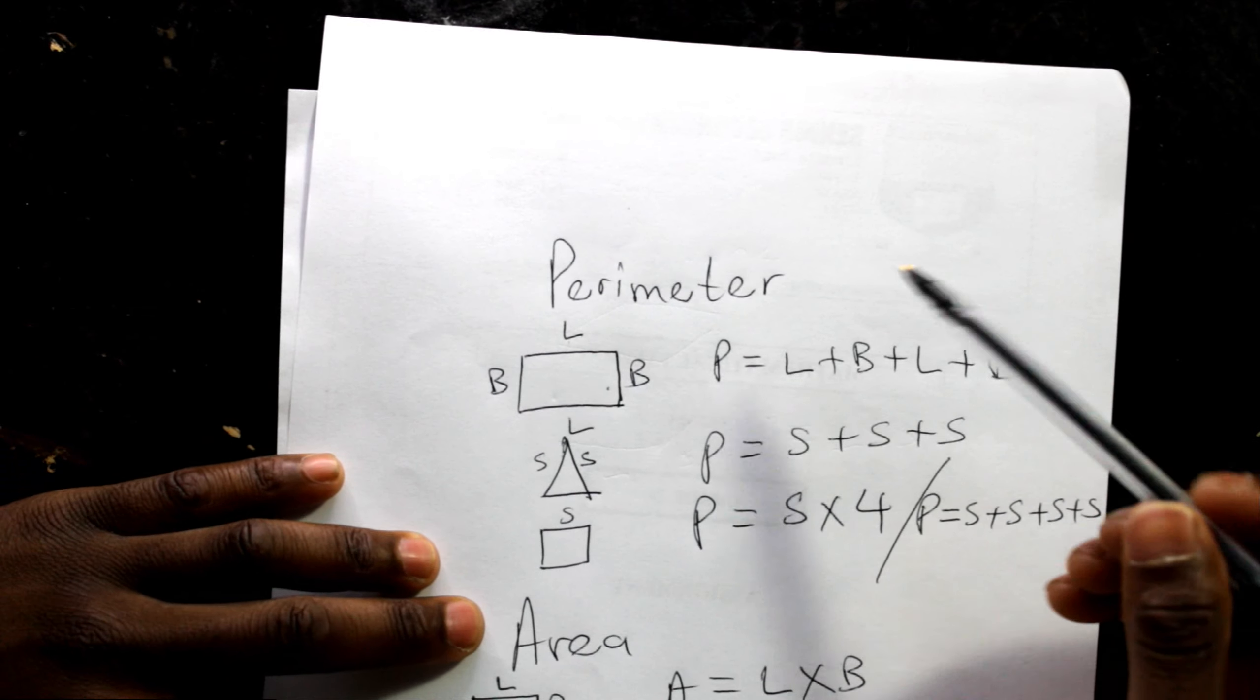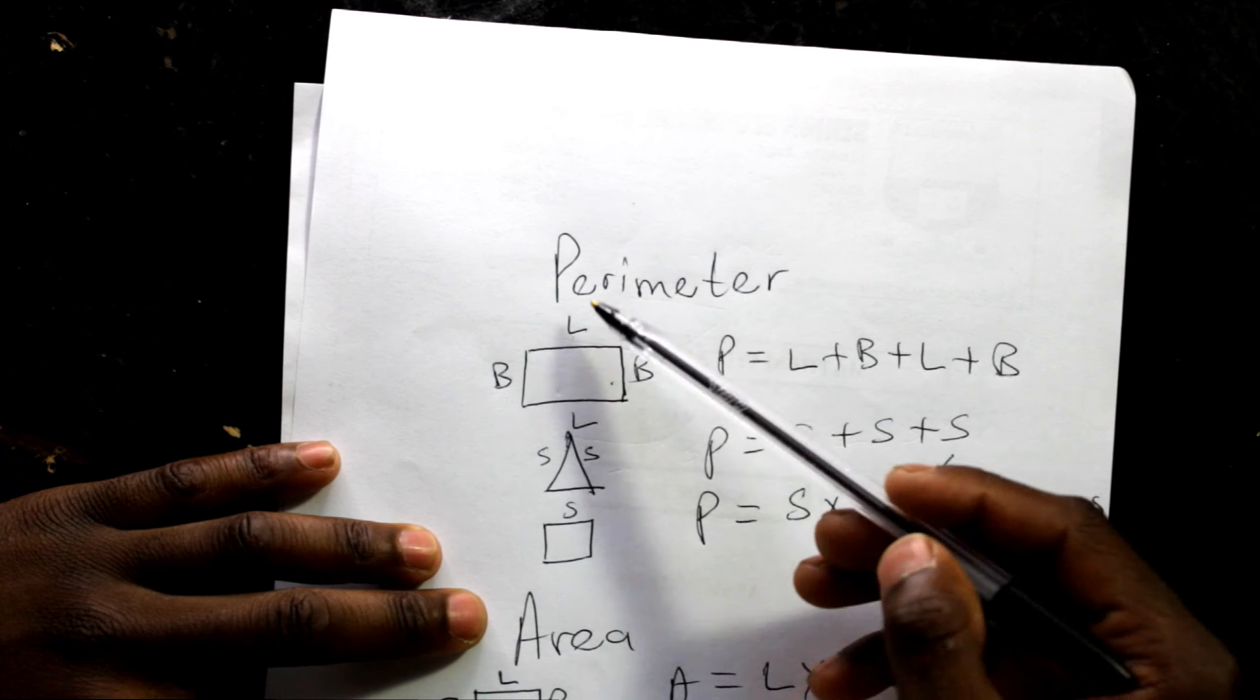Let's go to the definitions. Perimeter is a measurement around an edge of a shape. Area is a space which you put inside a flat shape, or two-dimensional shape. Volume is a space which you put inside a three-dimensional shape.